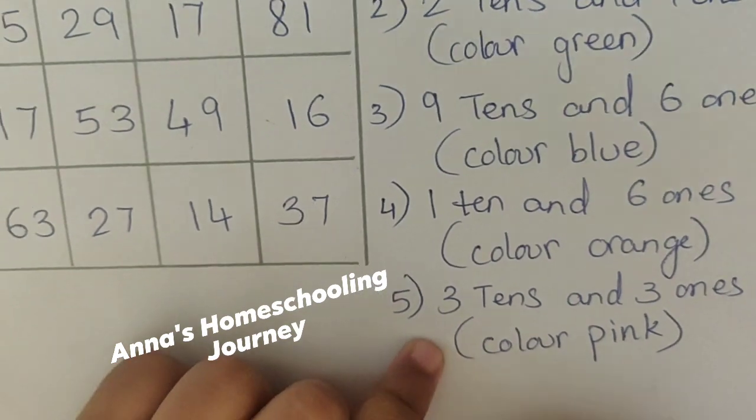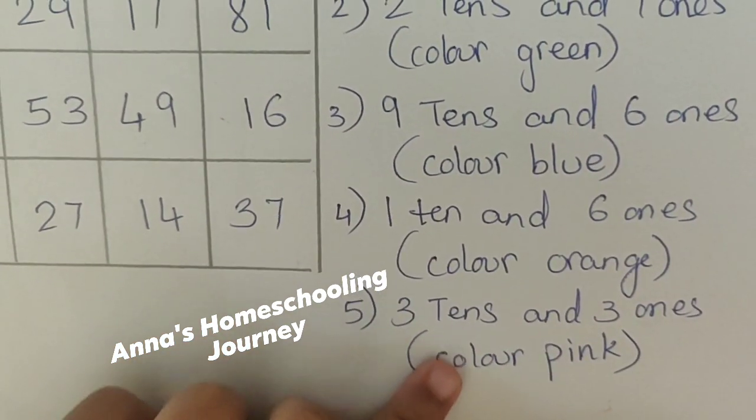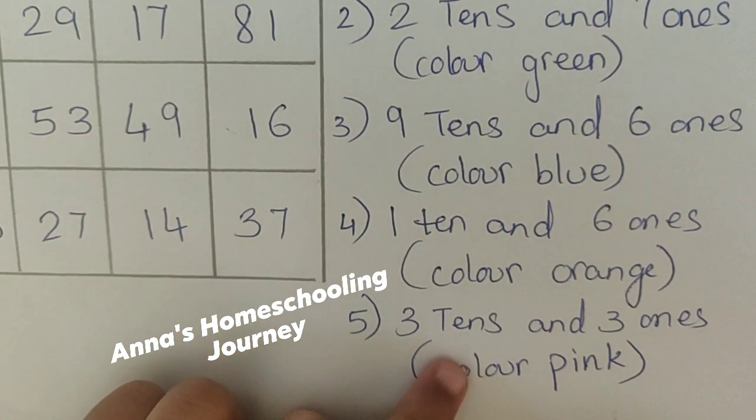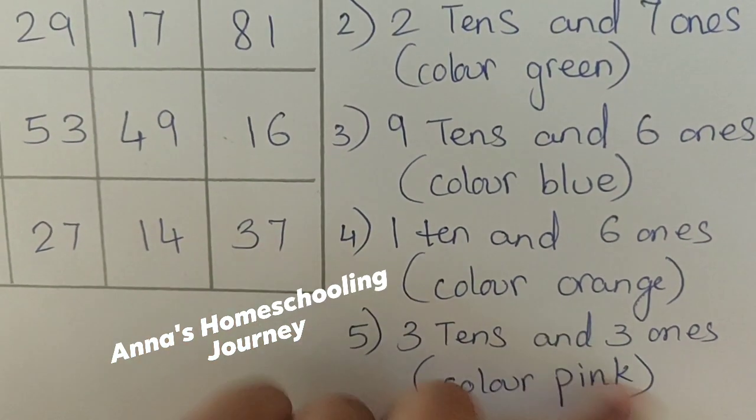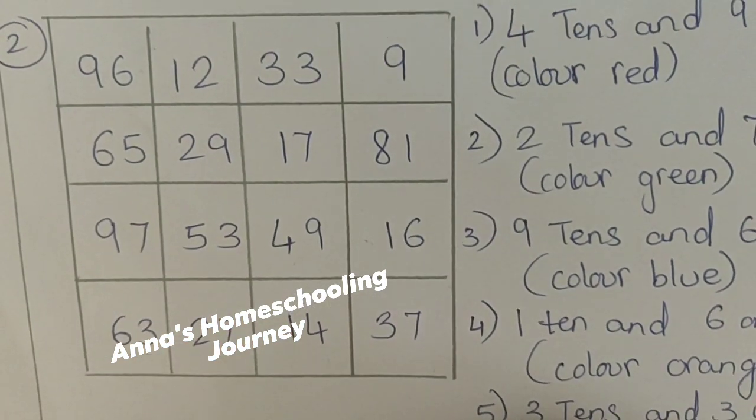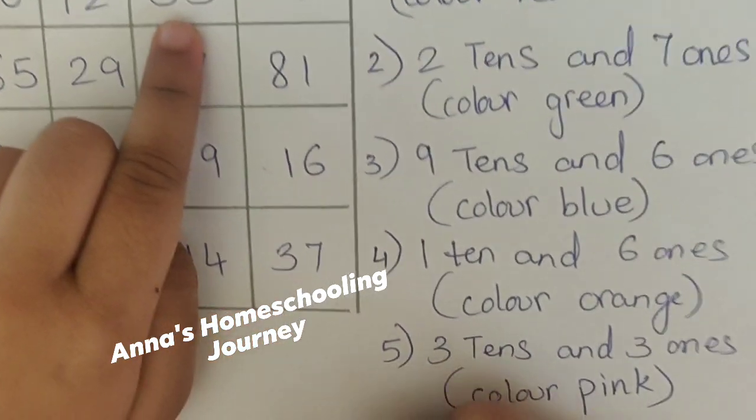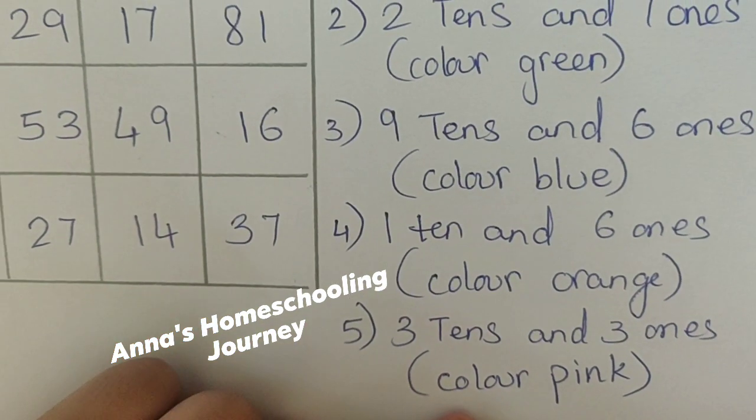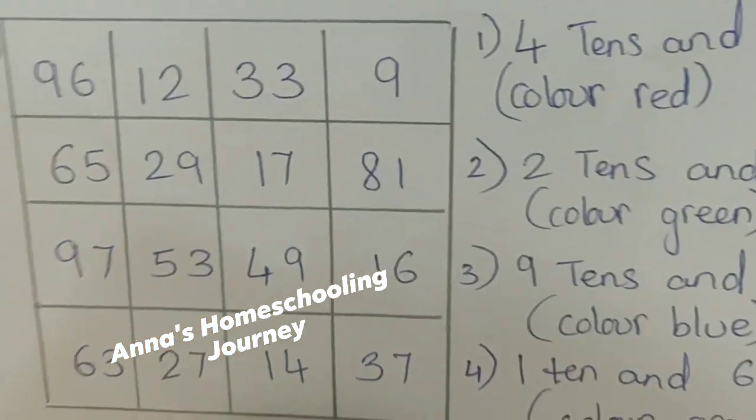Now, the fifth one. Last. 3 tens and 3 ones. Yes. So, 3 tens and 3 ones. It is 33. So, it's color pink. Yes. Very good.